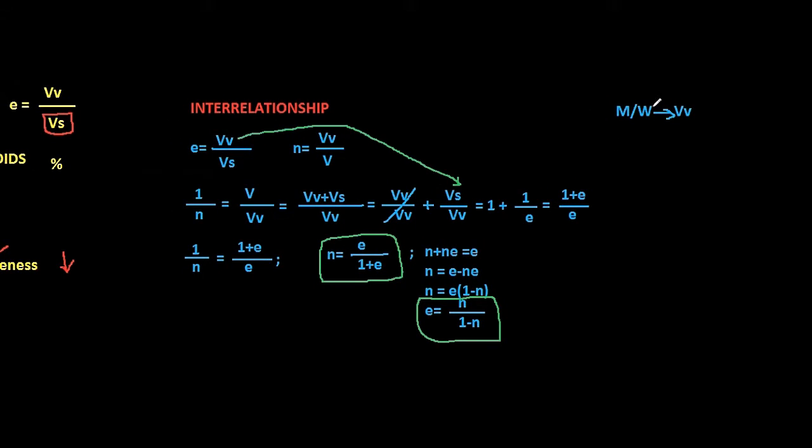Now we know that if there is a change in mass or weight of the soil, volume of voids changes. That is, the numerator in both the cases changes. Let's look at the denominators. For void ratio it is the volume of solids, and for porosity is the total volume. Now this total volume can be rewritten as volume of voids plus volume of solids. That means there is a volume of voids in the denominator also for porosity.